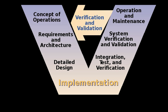In the V model, unit test plans are developed during the module design phase. These UTPs are executed to eliminate bugs at code level or unit level. A unit is the smallest entity which can independently exist, e.g. a program module. Unit testing verifies that the smallest entity can function correctly when isolated from the rest of the code units.